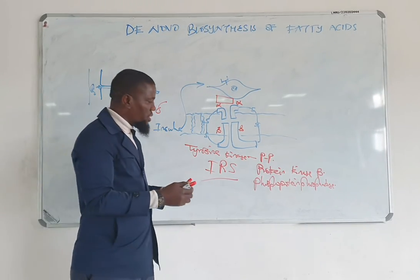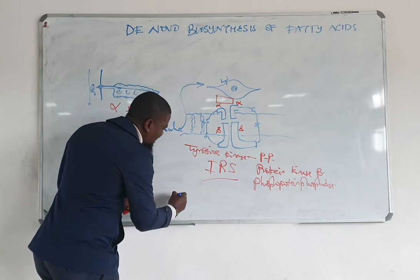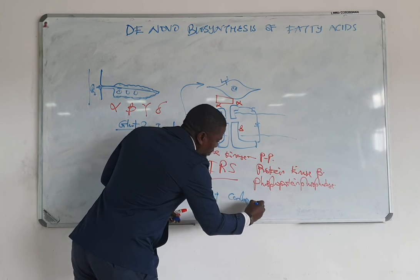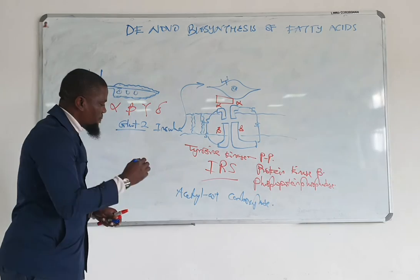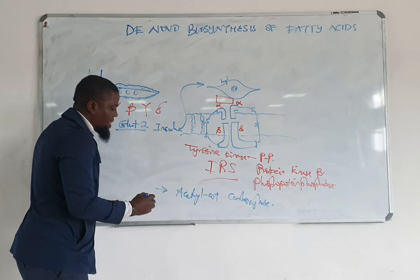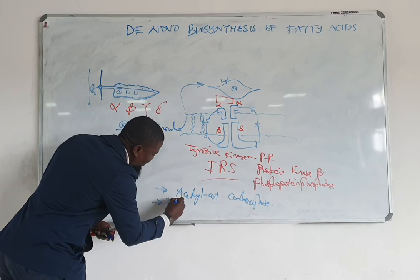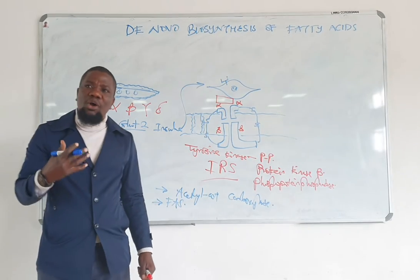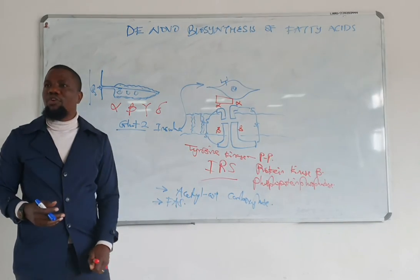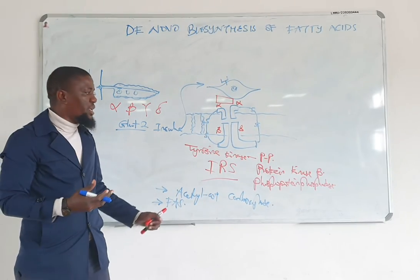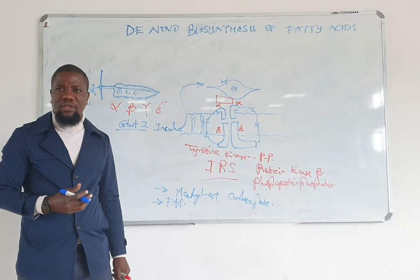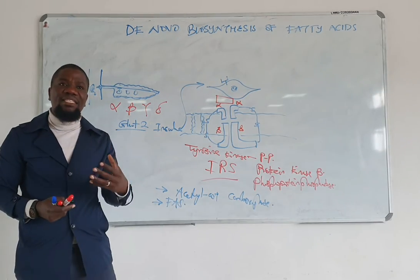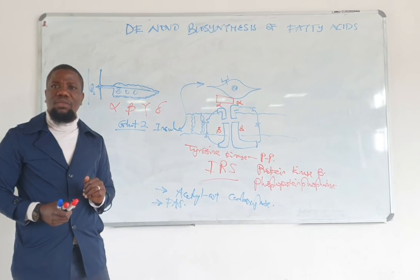Of primary interest here are two enzymes activated following insulin-induced dephosphorylation: acetyl-CoA carboxylase — the committing enzyme — and fatty acid synthase. These are the two enzymes that ultimately get activated in the presence of insulin.